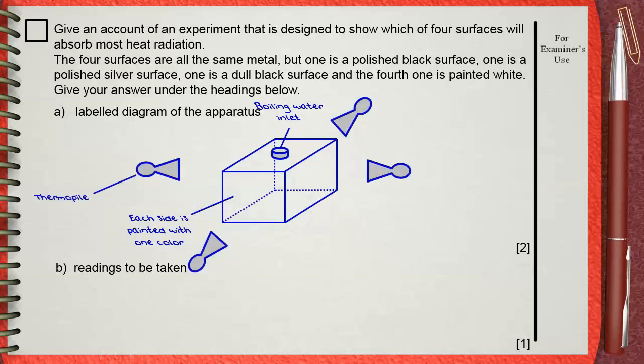We will use four thermopiles. The thermopile is an infrared detector, or you can say a heat radiation detector. Each thermopile will face one side of the Leslie Cube.